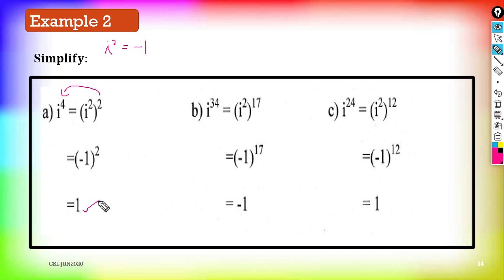Next: i^34. We put i² into the bracket. We need 2 × 17 = 34, so i^34 = (i²)^17. Replace i² with −1: (−1)^17. Since 17 is an odd number, (−1)^17 = negative 1.